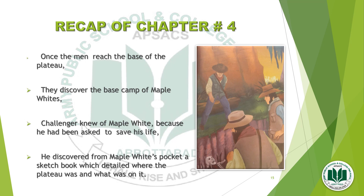Recap of Chapter 4: Once the men reach the base of the plateau — where the dinosaurs live — they look for a way to see the cliffs that surround it. While exploring, they discover the base camp of Maple White, the first discoverer of the plateau. Challenger knew of Maple White because he had been asked to save his life, but the man was dead by the time he arrived. He did discover a sketchbook in Maple White's pocket, which detailed where the plateau was and what was on it.